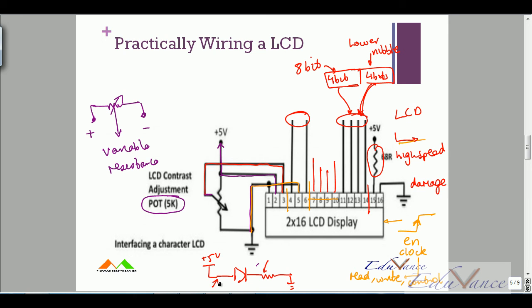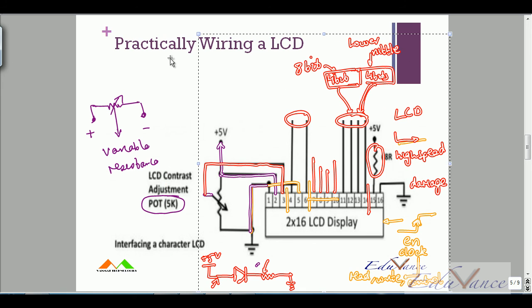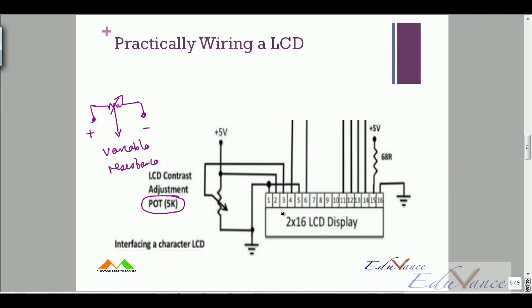To recap: we have three power pins, three control pins, eight data pins, and two backlight pins. We also understood the data register and control register, and the difference between four-bit and eight-bit mode.